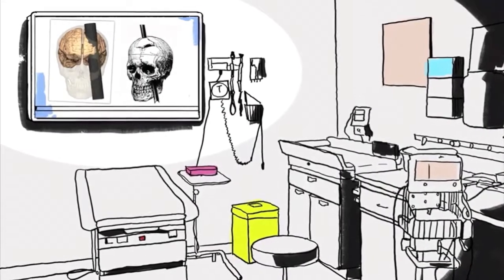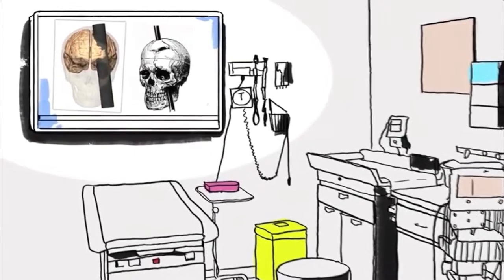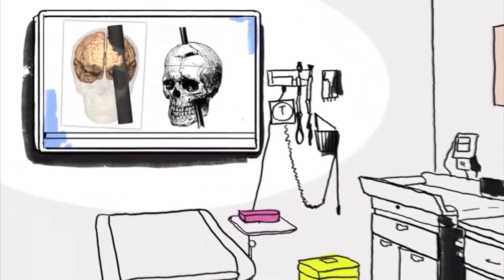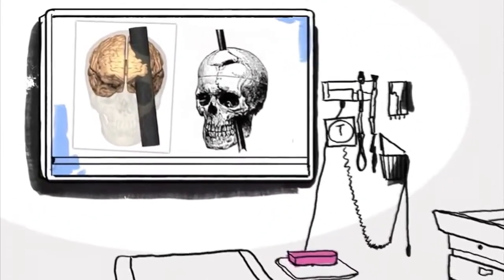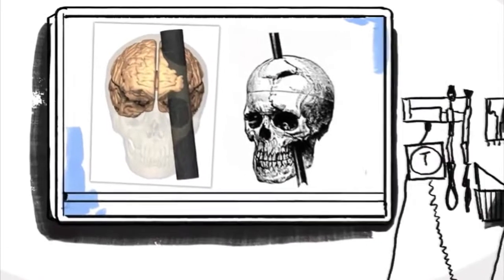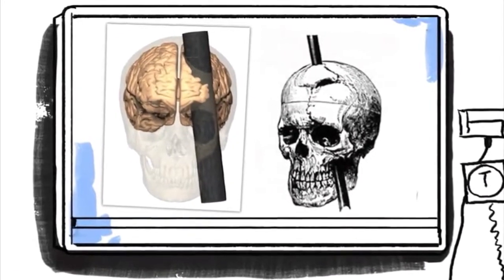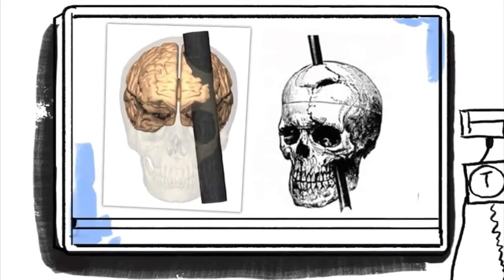It entered the left side of Gage's jaw, moving in an upward direction, it passed behind the left eye, through the left side of the brain, and it went out the top of his skull and went several feet away with a clatter.